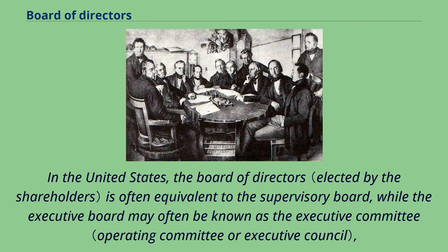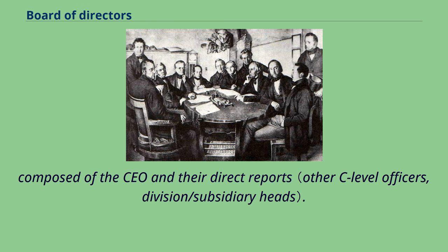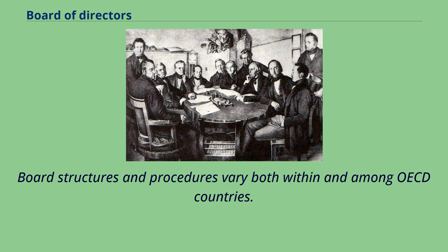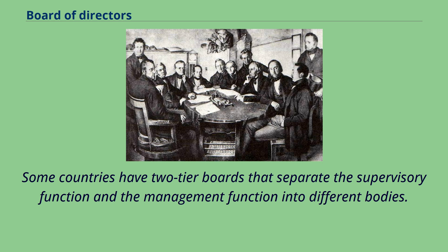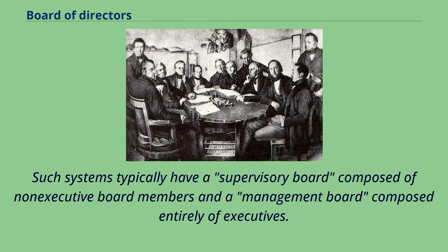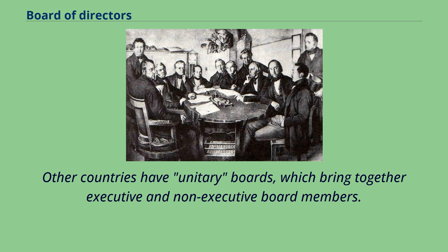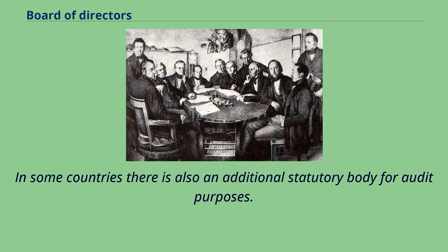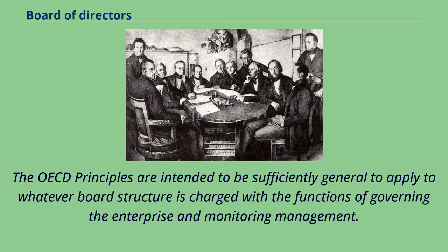There is a strong parallel with the structure of government, which tends to separate the political cabinet from the management civil service. In the United States, the board of directors is often equivalent to the supervisory board, while the executive board may often be known as the executive committee, composed of the CEO and their direct reports. Board structures and procedures vary both within and among OECD countries. Some countries have two-tier boards that separate the supervisory function and the management function, while others have unitary boards which bring together executive and non-executive board members. In some countries there is also an additional statutory body for audit purposes.